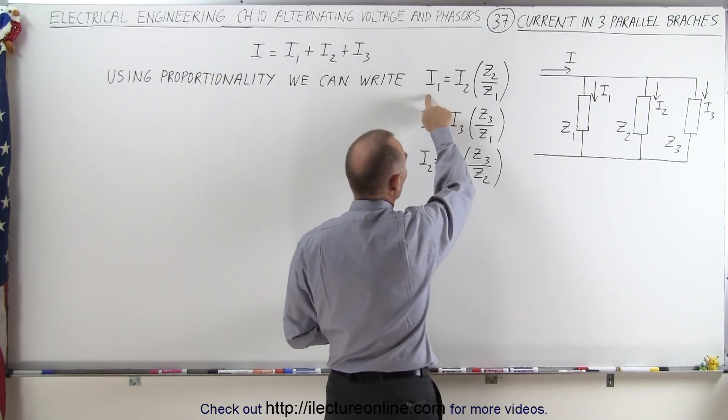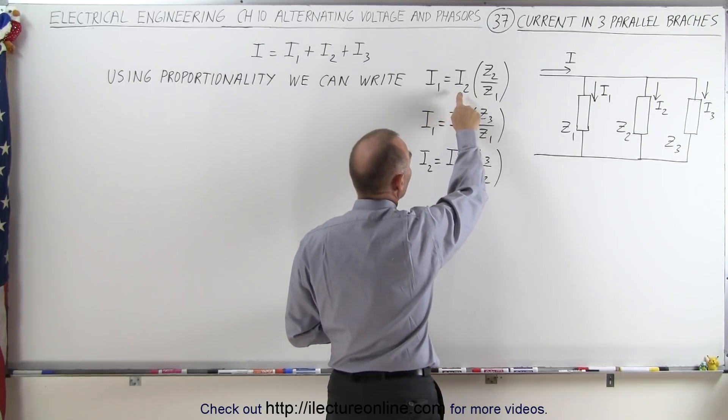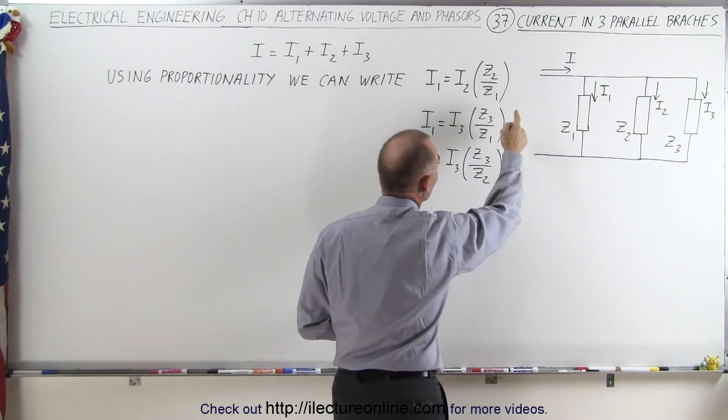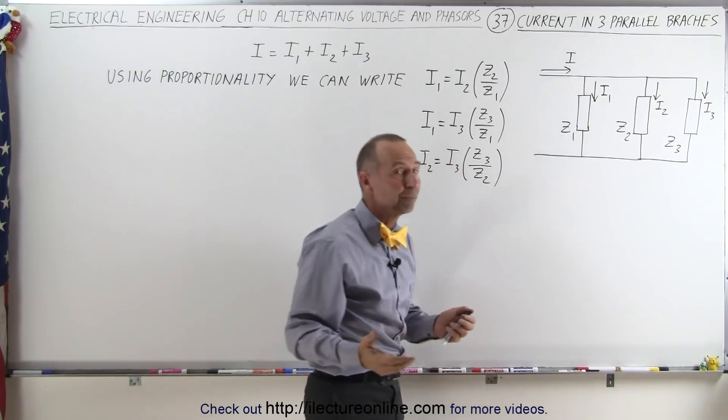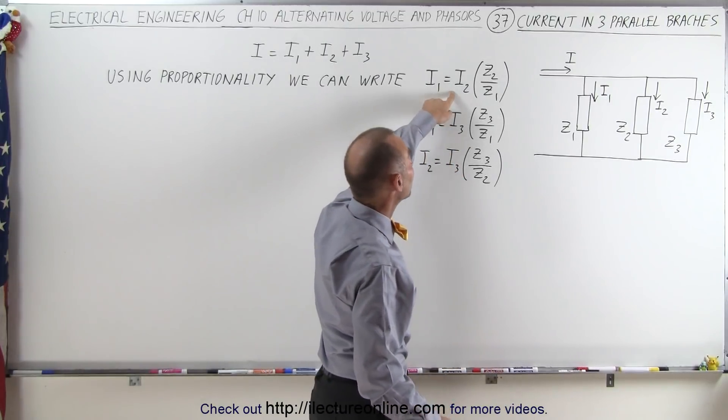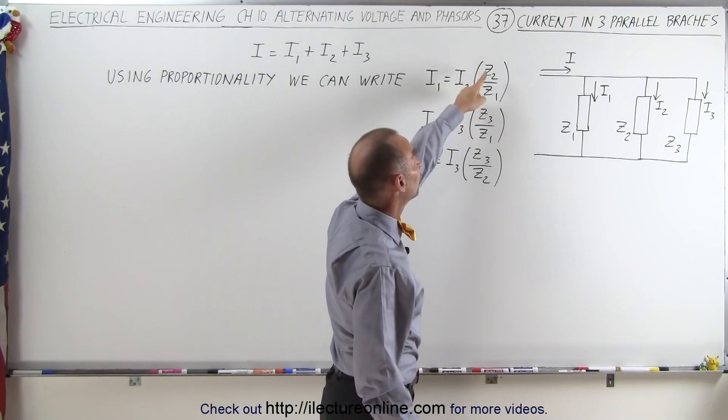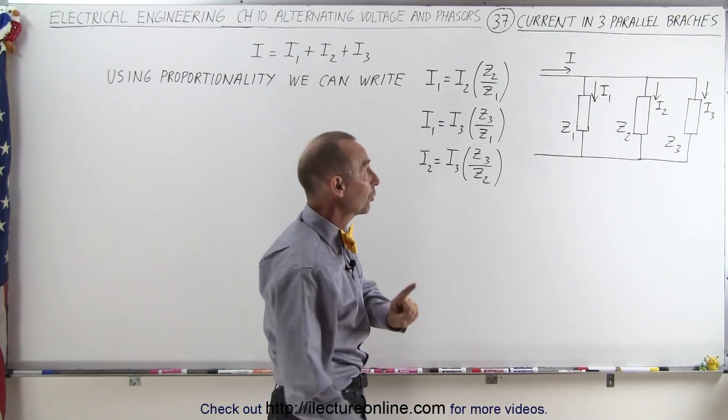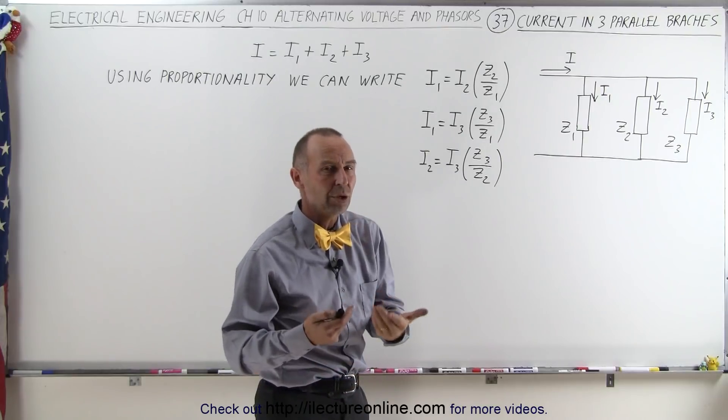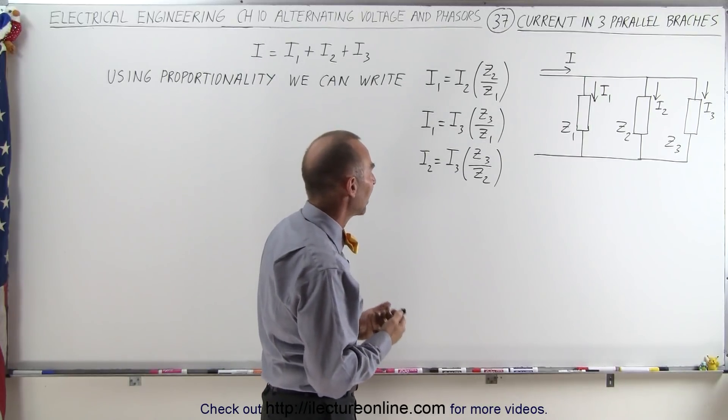We can say that the current in branch I is equal to the current in branch II divided by the ratio of the impedance in II divided by the impedance in I. In other words, if the impedance in the second branch is twice the impedance in the first branch, that means the current in the first branch will be twice the current in the second branch. That's what we call the concept of proportionality.